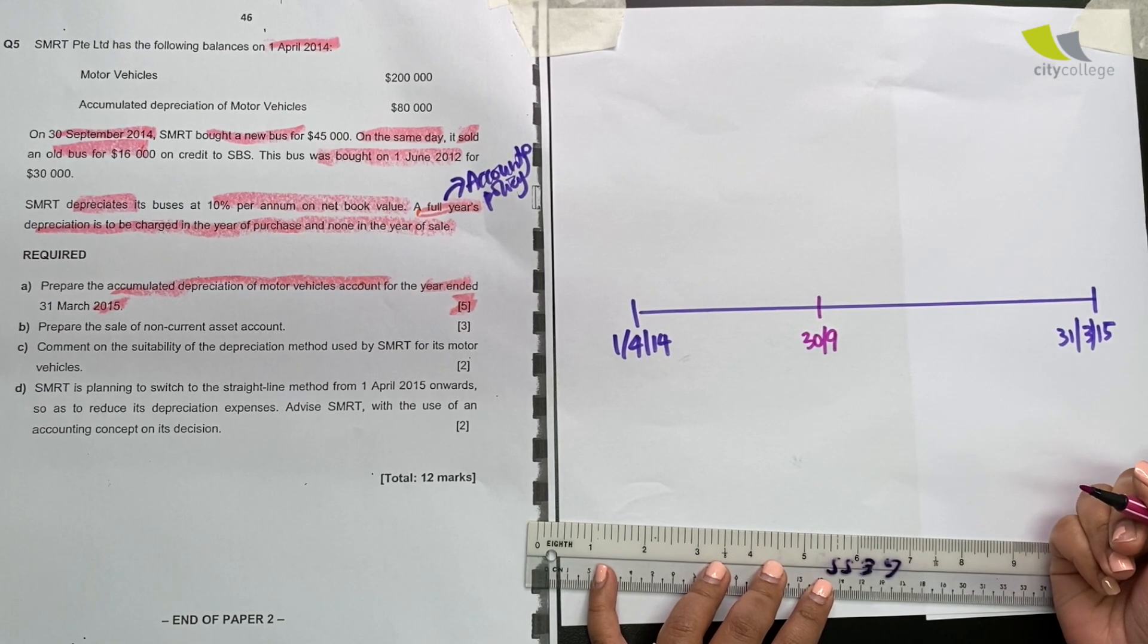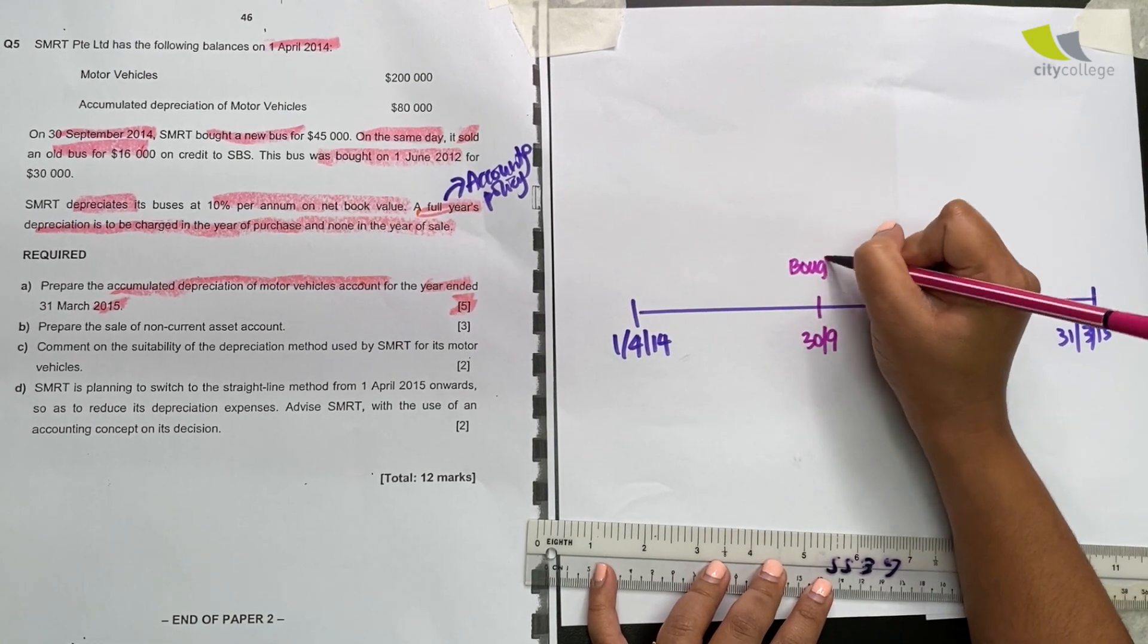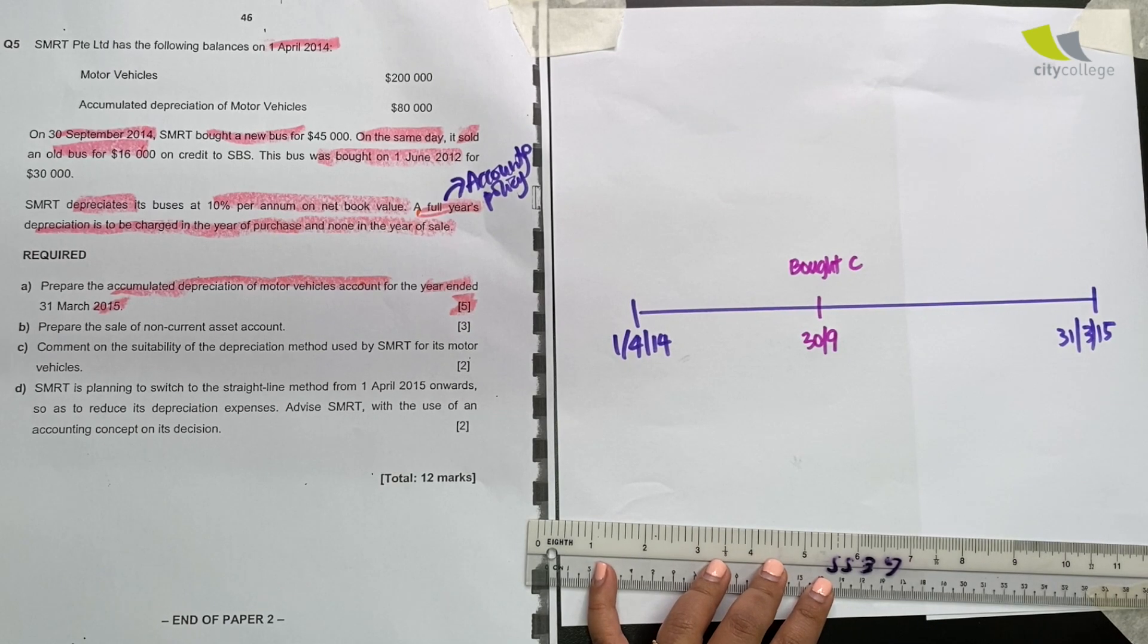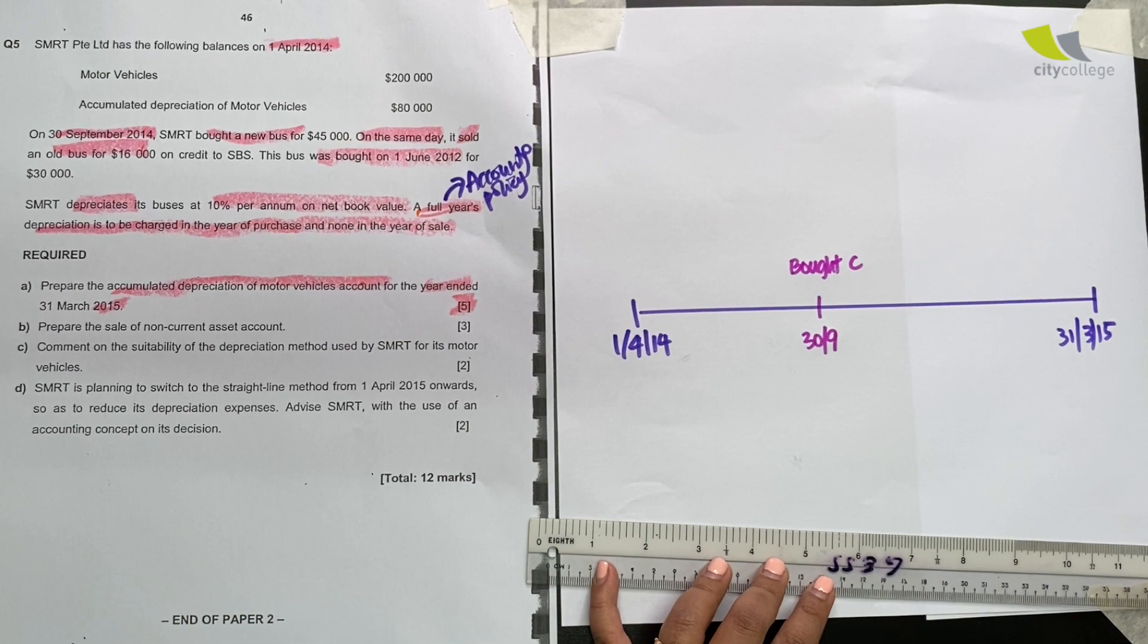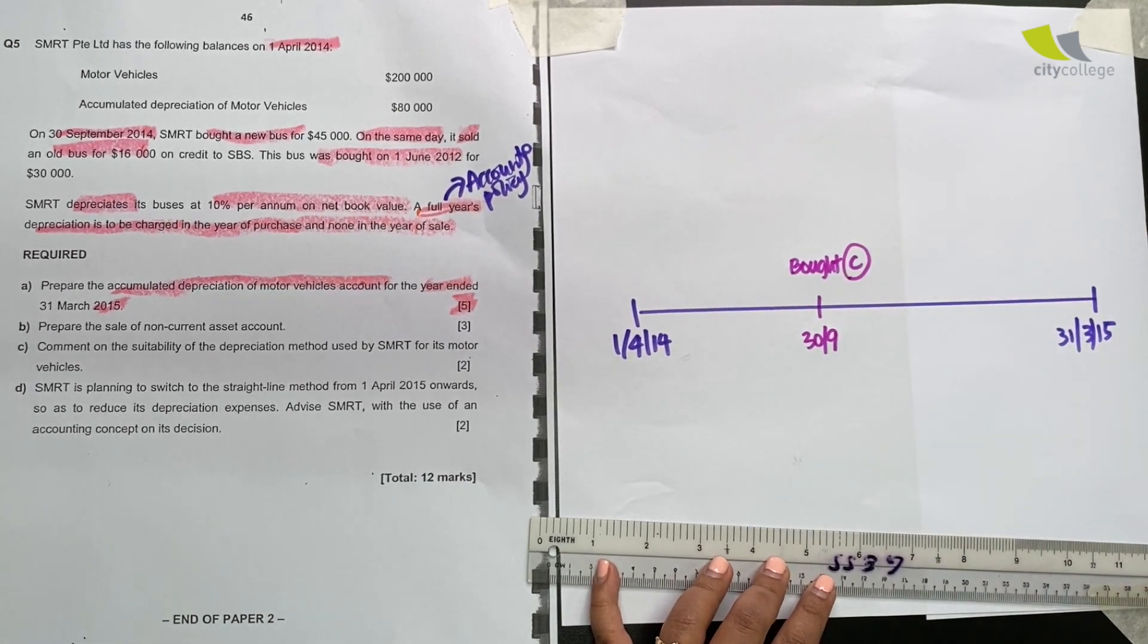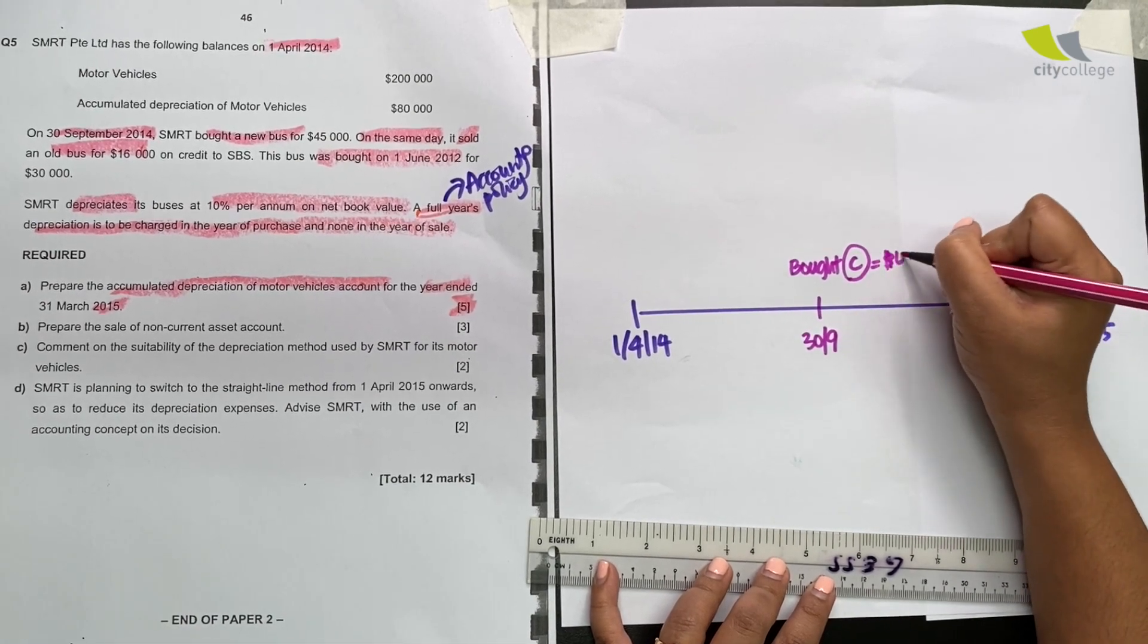SMRT bought a new bus for $45,000. So I can randomly call this C. Why do I call it C? Because if you've practiced enough, you will know that this style of question actually is going to involve asset A, B and C. Just follow me and I'll guide you along. So it buys this asset which I have chosen to label as C. It buys it for $45,000.